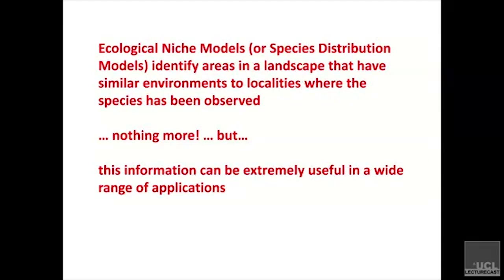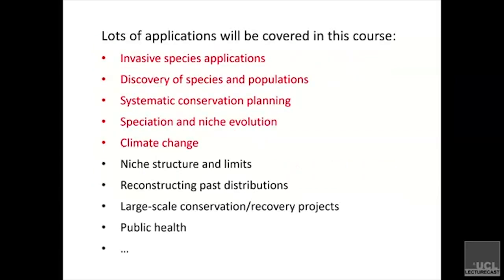A key point to emphasize — building on the whole body of theory — is that niche models or distribution models identify areas in a landscape that have similar environments to localities where the species has been observed. That's essentially all a distribution model does. It just tells you where in the landscape the environment is similar to where you've already observed the species. Nothing more. We need to bear that in mind, and although the assumptions don't always hold, this information can be extremely useful across a really wide range of applications.